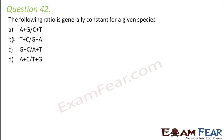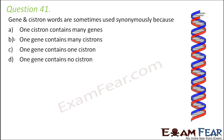Question number 41. Gene and cistron words are sometimes used synonymously because: one cistron contains many genes, one gene contains many cistrons, one gene contains one cistron, or one gene contains no cistron.